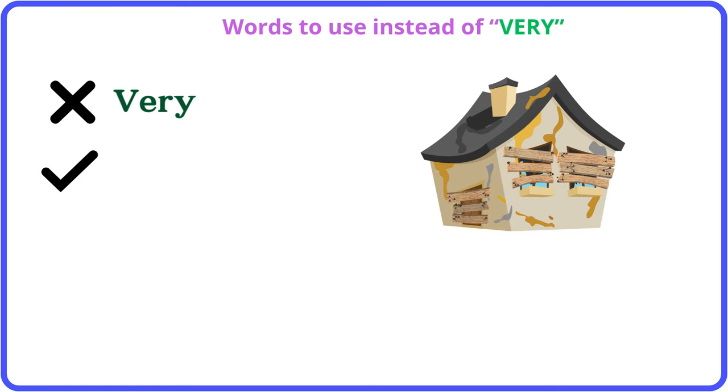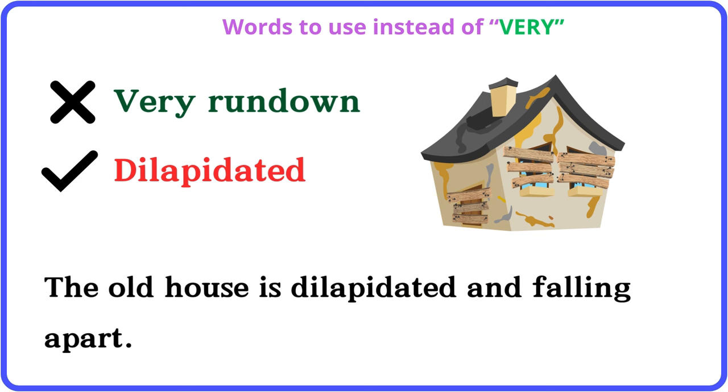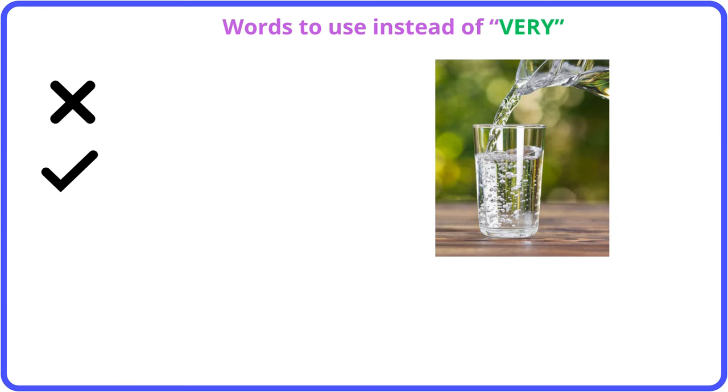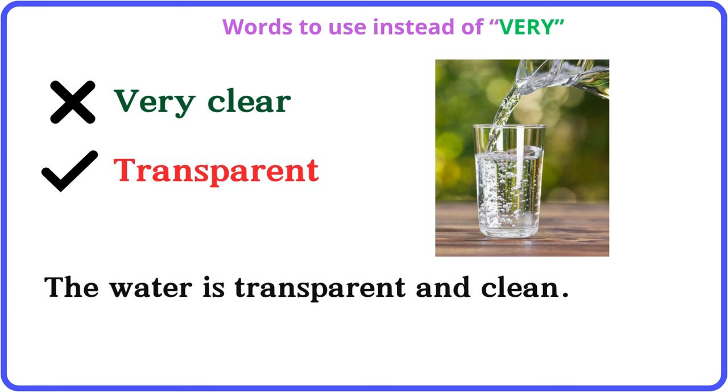Very run down: dilapidated. The old house is dilapidated and falling apart. Very clear: transparent. The water is transparent and clean.